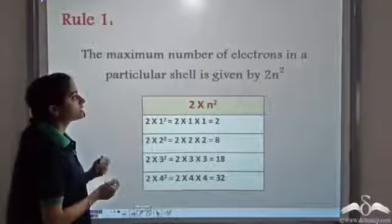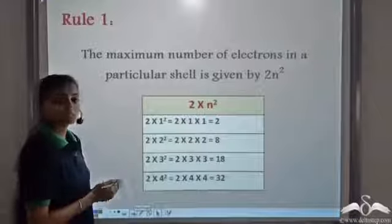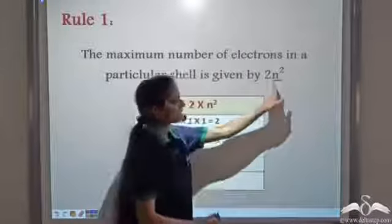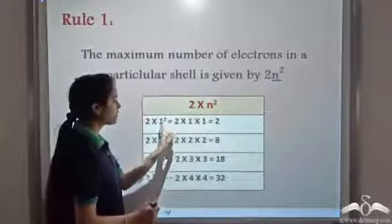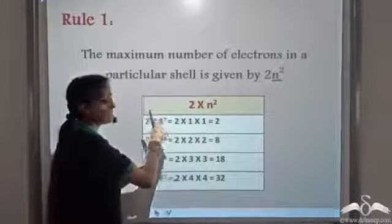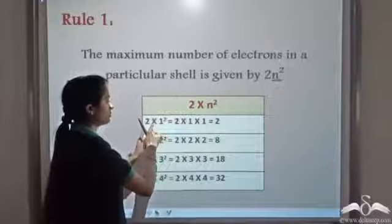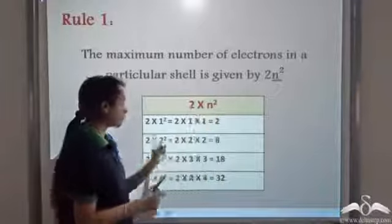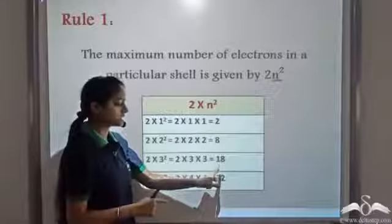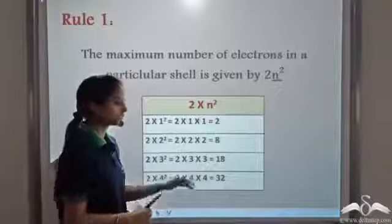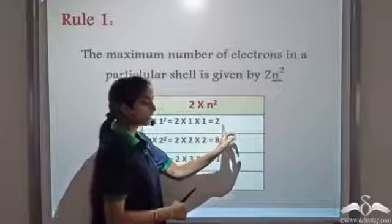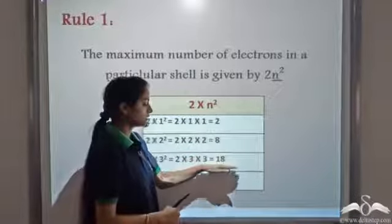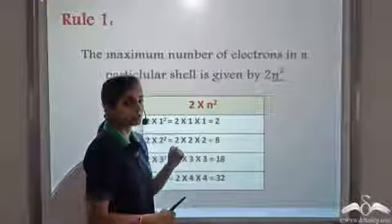The first rule of the scheme is that the maximum number of electrons in a particular shell is given by 2n², where n stands for the number of the shell. The first shell has n=1, so it can hold 2 electrons. The second shell has n=2, giving 8. Then 18, 32, and so on. So the first shell can have a maximum of 2 electrons, the second shell 8, the third shell 18, and so on.